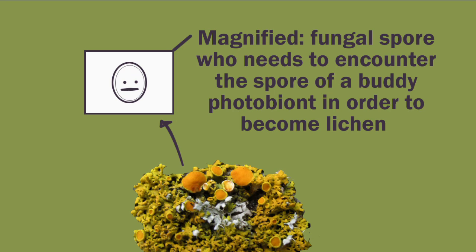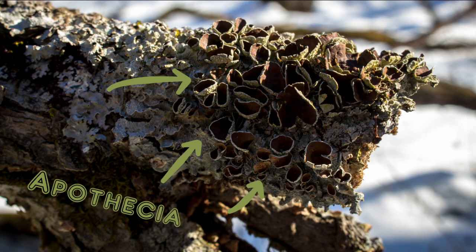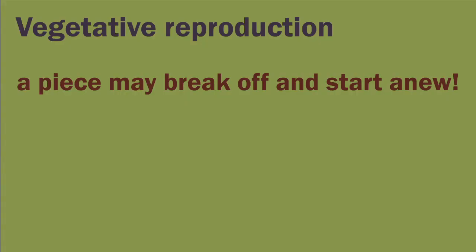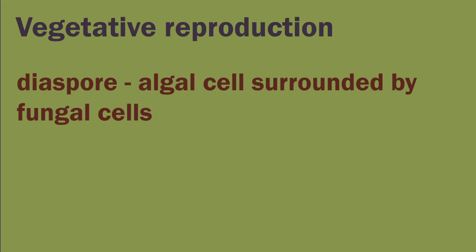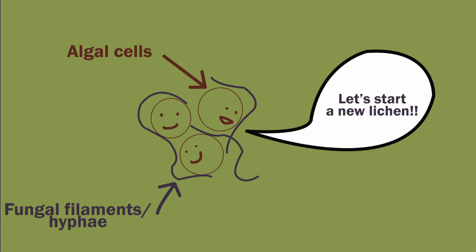To reproduce sexually, the fungal component of the lichen produces fruiting bodies that release spores. In order to create its own lichen, these spores must go and find their compatible photobiont. One common type of reproductive structure is the apothecia. Lichens can also reproduce vegetatively. This might involve breaking a piece off and starting anew elsewhere, or it can involve the use of diasporas. Diasporas, unlike the fungal spores released during sexual reproduction, are a few algal cells surrounded by fungal cells, so they're able to establish more easily as a lichen.